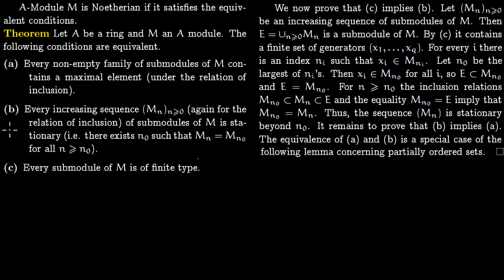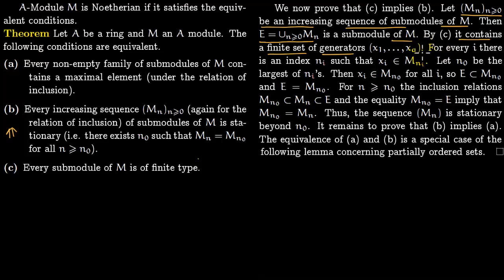Now we prove C implies B. Let M_n for n ≥ 0 be an increasing sequence of submodules of M. Set E as the union of all these submodules; then E is again a submodule of M. Assuming C, E is of finite type, so it has a finite set of generators, say x₁, …, x_q. The argument now proceeds exactly as for Noetherian rings: for every index i there is an index N_i such that x_i lies in M_{N_i}.